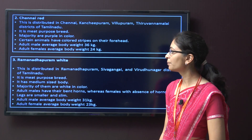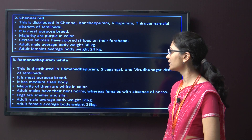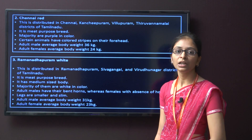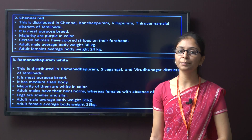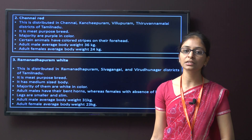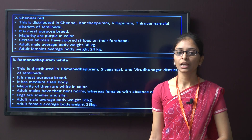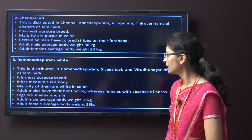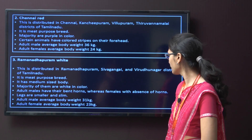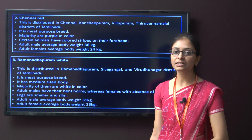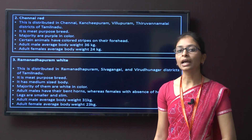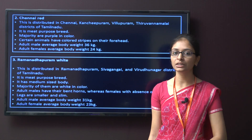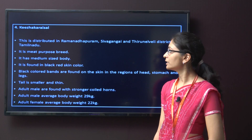The next breed is Ramanathapuram White. It is distributed in Ramanathapuram, Sivagangai, and Virudhunagar district of Tamil Nadu. This breed is also meat purpose, with medium size body and mainly white in colour. The adult male have bent horns whereas females have no horns, and their legs are very small. The average body weight for male is 31 kg and for female is 23 kg.